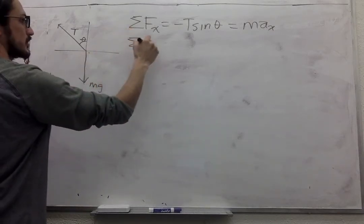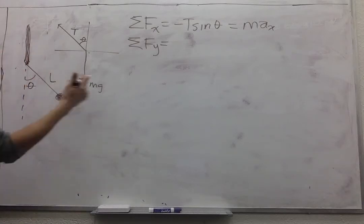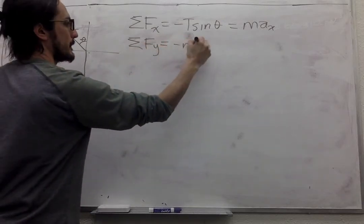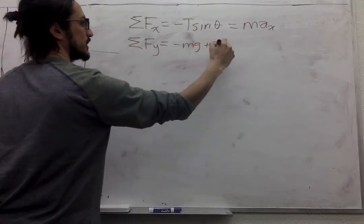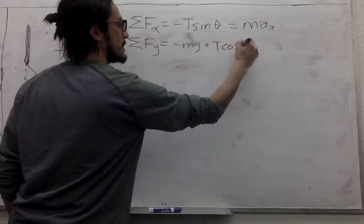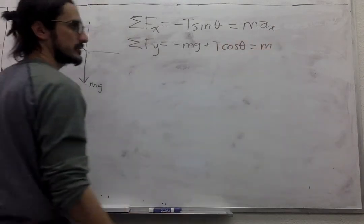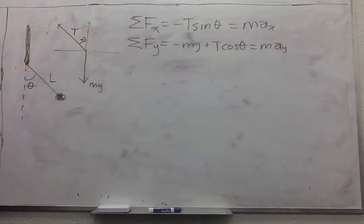We do the same thing for the Y direction. We have minus mg and plus T cosine theta. That's equal to mass times acceleration in Y.